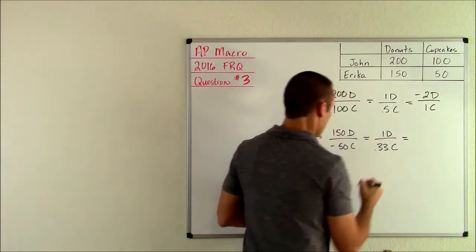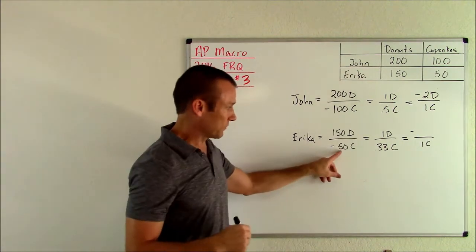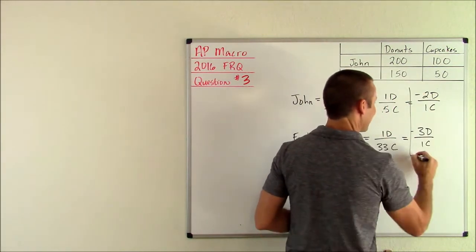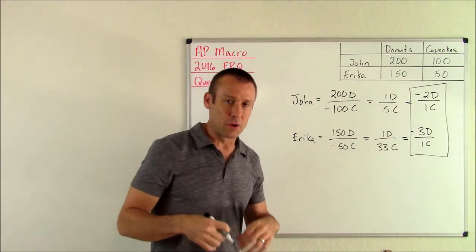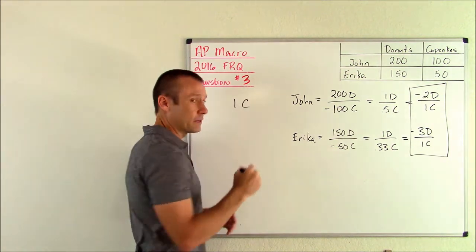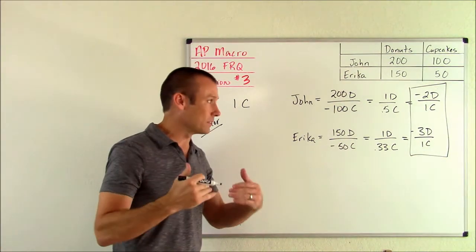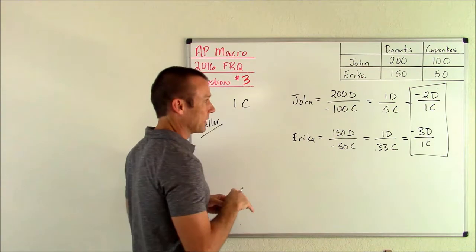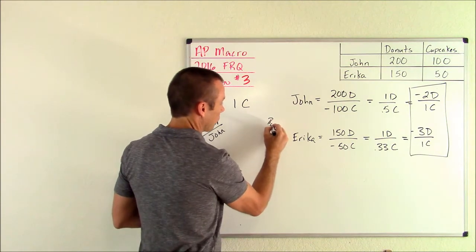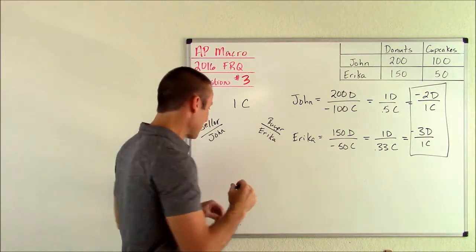For Erica, divide both of these by 50 to get this in terms of one cupcake. 50 divided by 50 is one. 150 divided by 50 is three. I'm going to write three donuts. I'm going to use this right here to go ahead and build out my range of mutually beneficial trade terms. I want to get this in terms of cupcakes. Who's going to be the seller of cupcakes? That's the one with the comparative advantage, the lowest opportunity cost when they make cupcakes. And who is that? That's John. I'm going to write John right here seller, and then buyer, that's going to be Erica.